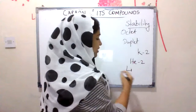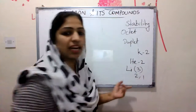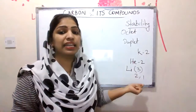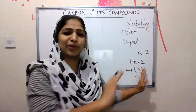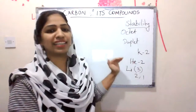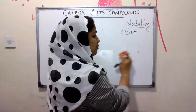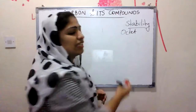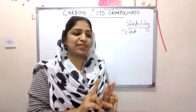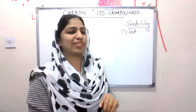Lithium has atomic number 3, with electronic configuration 2,1. Lithium needs one more electron to complete its duplet. I will tell you that stability in octet completion is possible. Duplet completion is also possible in the case of smaller elements — two electrons make them stable.